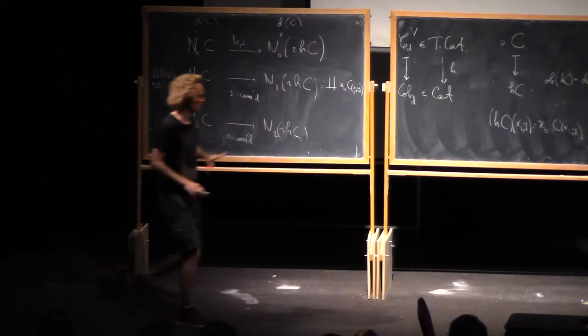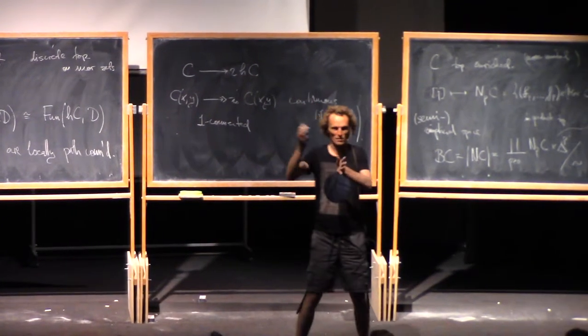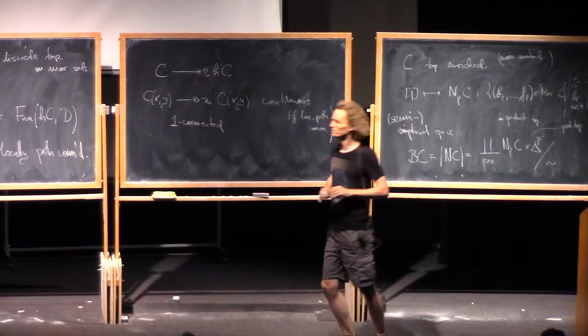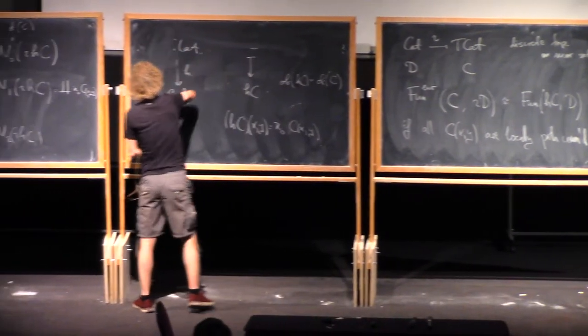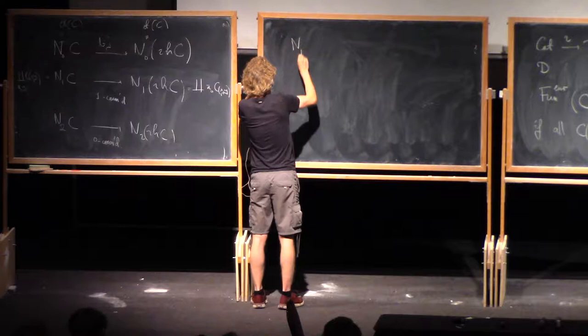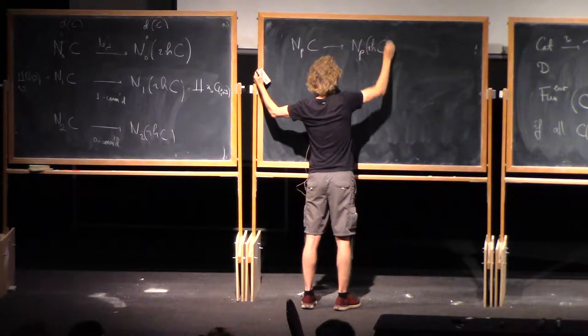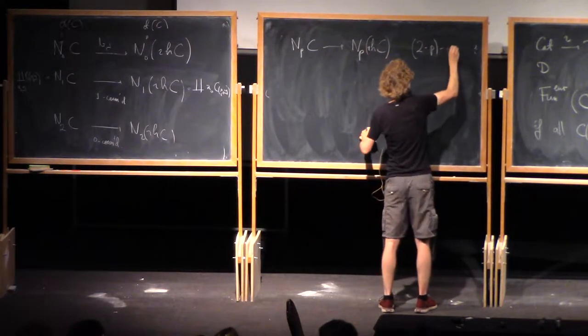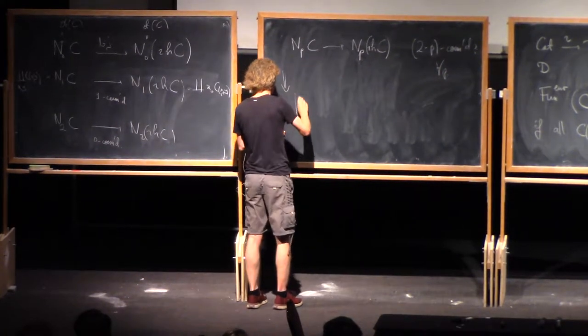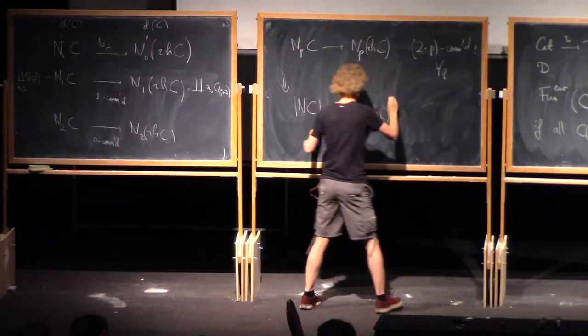So in general, for all p, the induced map of N_p is 2-p connected. And then there's a general fact about semisimplicial topological spaces. That if you have a map of such things, where the map of p-simplicis is k-p connected, then the map of realizations is k-connected. N_p of C to N_p of HC, this is always 2-p connected for all p. And this implies that NC to NHC is 2-connected.